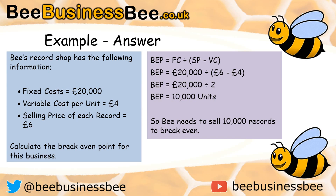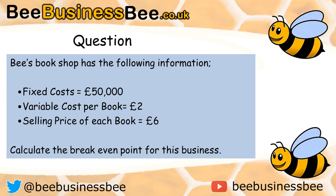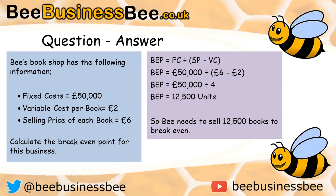Now over to you. B has a bookshop and has given you the following information: fixed costs of £50,000, variable cost of £2, and a selling price of £6 per book. Calculate the break-even point for the business. Pause the video now and complete the activity, then unpause when I explain the answer.